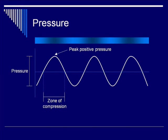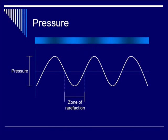All of the areas where the pressure is less than zero is the zone of rarefaction — that is where the molecules are being pulled apart. The lowest pressure is the peak negative pressure. Those values are important when we consider mechanical effects in tissue, as we'll talk about later.